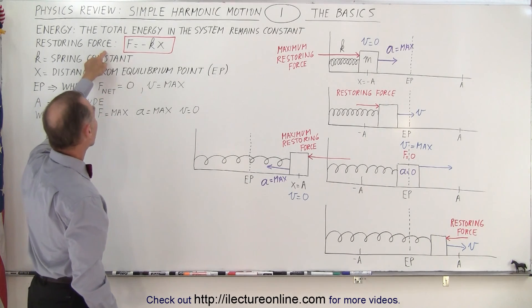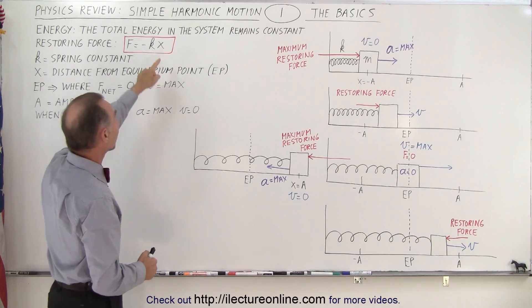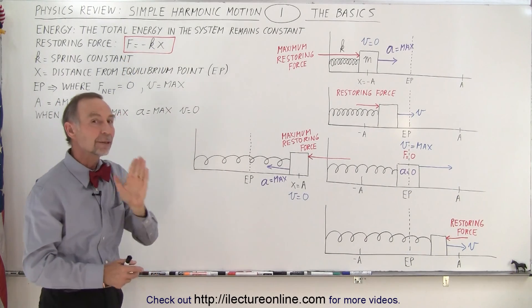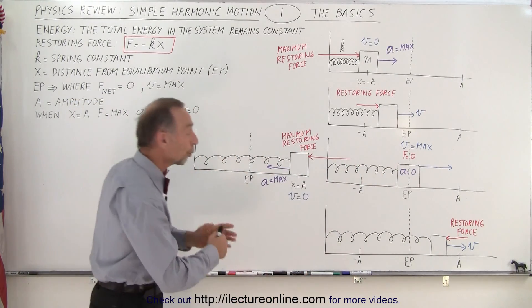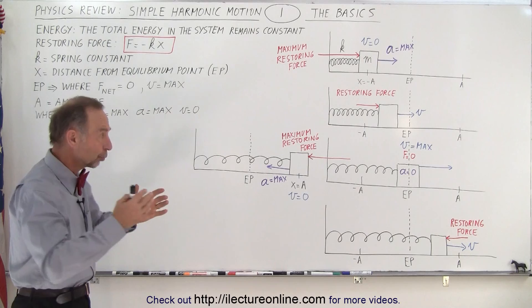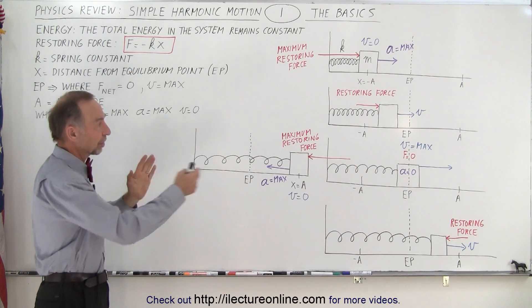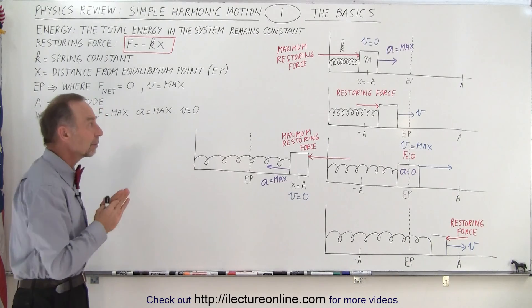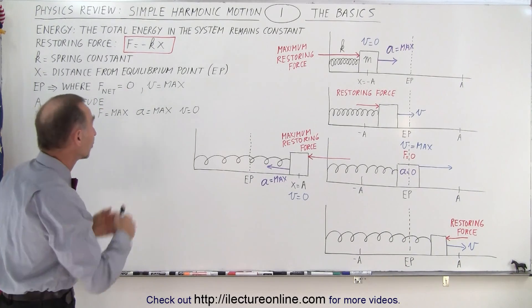There's always going to be a restoring force which is equal to negative K, which is a spring constant, times position away from the equilibrium point. When you're at the equilibrium point, the force will be zero. Away from the equilibrium point, the force will grow in magnitude as X becomes bigger. As you get farther from the equilibrium point, the force trying to push it back increases in magnitude.